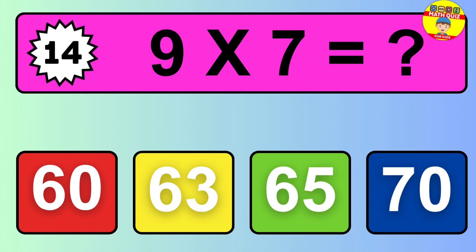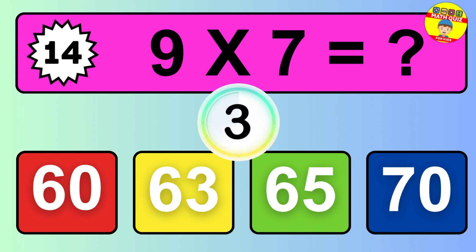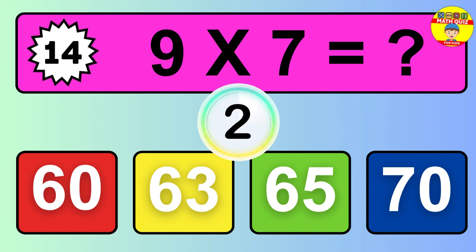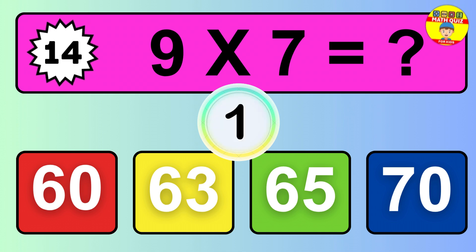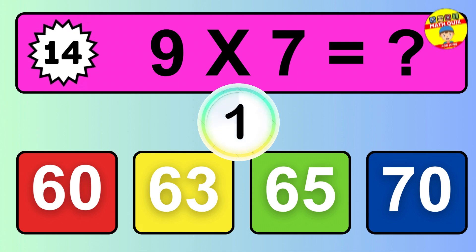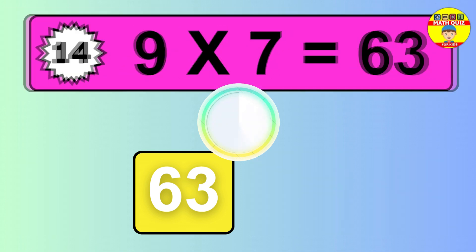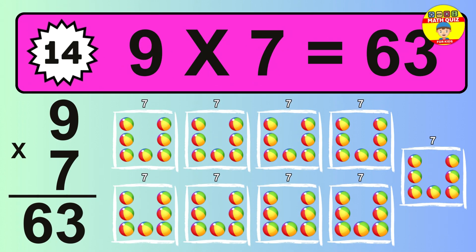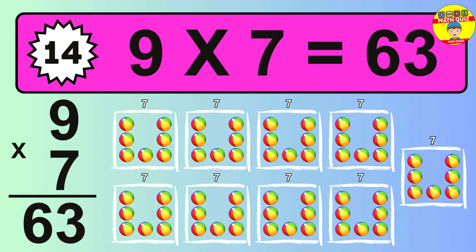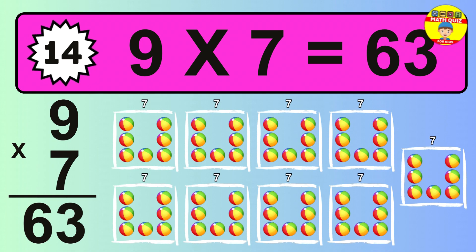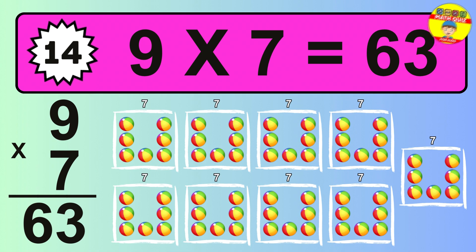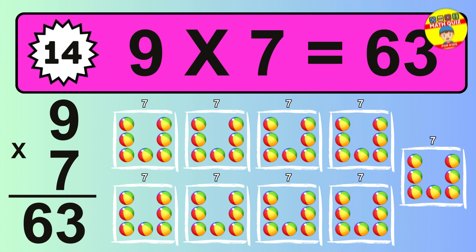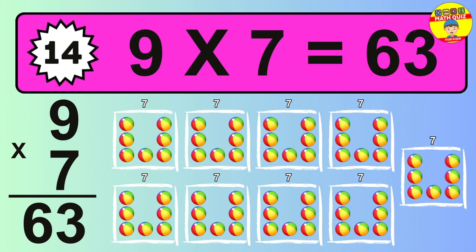Question 14. 9 times 7 equals what? So how many balls do we have? Sixty-three balls.